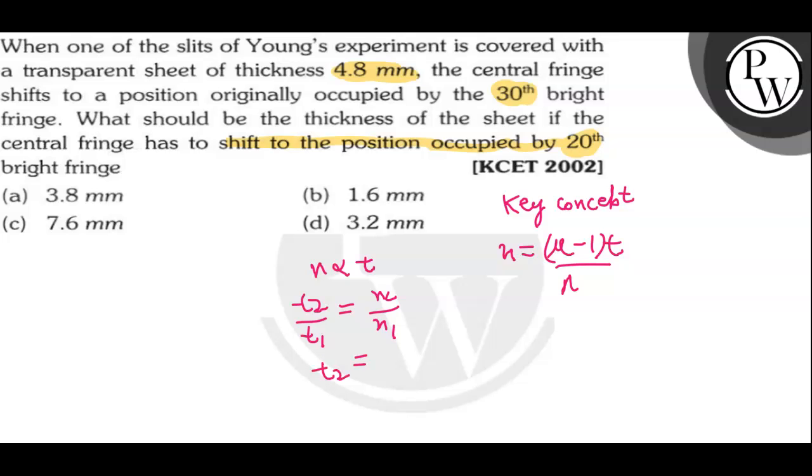Now the values of n2 and n1: n2 is 20 and n1 is 30, and t1 is 4.8 millimeter. Now put the whole equation: 20 by 30 into 4.8.